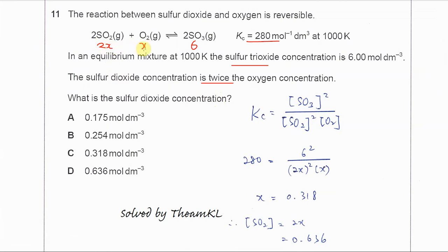We substitute these values into the Kc expression. So it's the SO3 squared over the SO2 squared times the O2. So we get 280 equal to 36 over 4X squared times X.